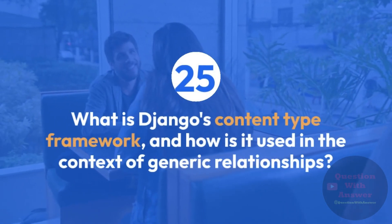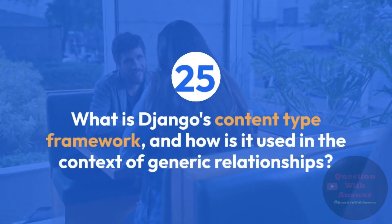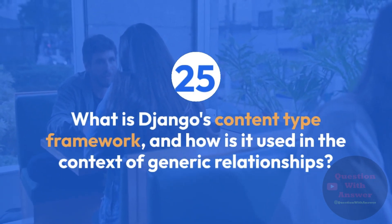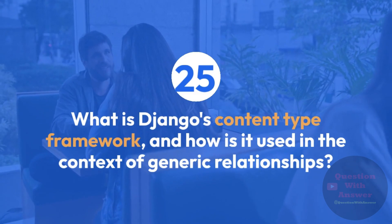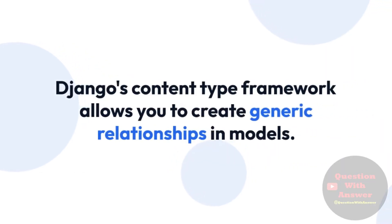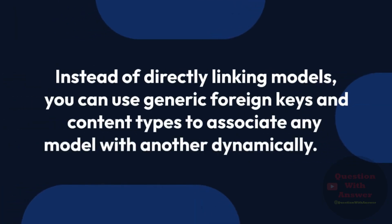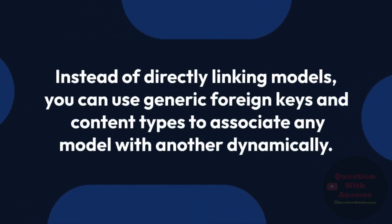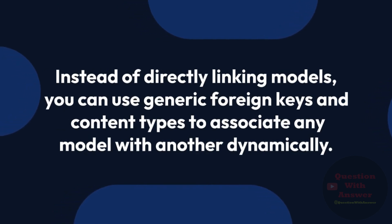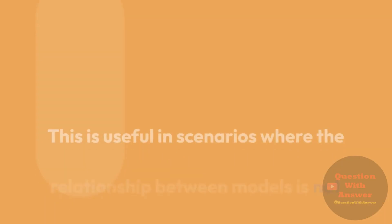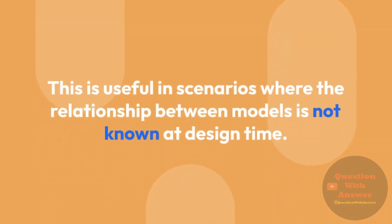Question 25: What is Django's content type framework, and how is it used in the context of generic relationships? Answer: Django's content type framework allows you to create generic relationships in models. Instead of directly linking models, you can use generic foreign keys and content types to associate any model with another dynamically. This is useful in scenarios where the relationship between models is not known at design time.